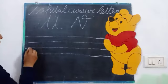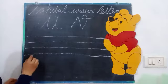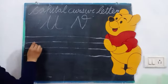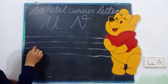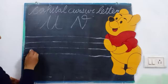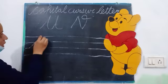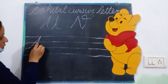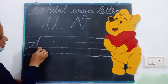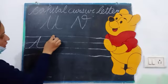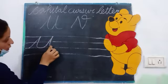Capital cursive letter U: upper line, bottom line, upper middle line, bottom middle line. Slanting line, then starting line, then curve. Slanting line, then curve.